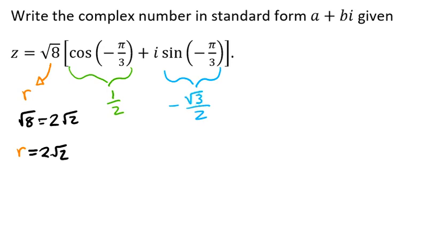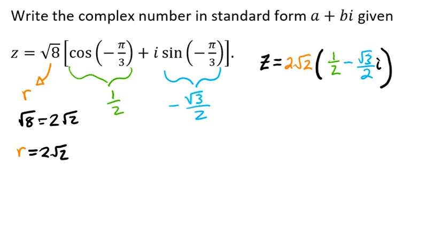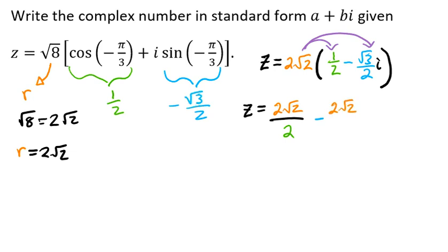Now we're going to plug in what we have. So z equals our r value of 2 radical 2, times 1 half minus radical 3 over 2 times i. Remember that i is still there. Then we distribute the 2 radical 2 to each piece, giving us 2 radical 2 over 2, minus 2 radical 2 times radical 3, all over 2, times i.